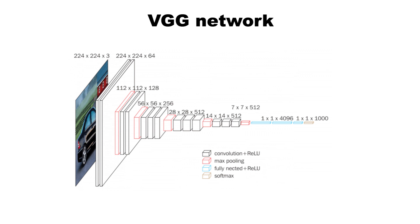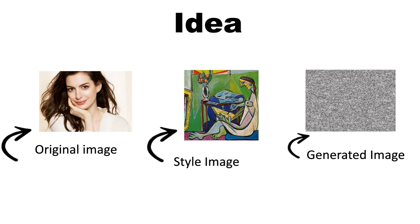This method of NST is quite different from how we normally do things. Normally we would send in some input, get some output, and just want the network to manipulate its weights so that it can learn a good representation. So the idea is that we have three things: the original image, the style image, and the generated image, which is going to be initialized as noise. Through training, we want the generated image to become the original image with the style of the style image. This is very different because we are now changing the input rather than the weights.